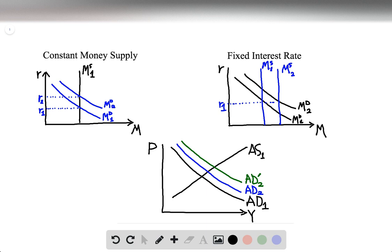So to sum up, the effect on aggregate demand from an increase in government spending will be larger if the Fed maintains a fixed interest rate.